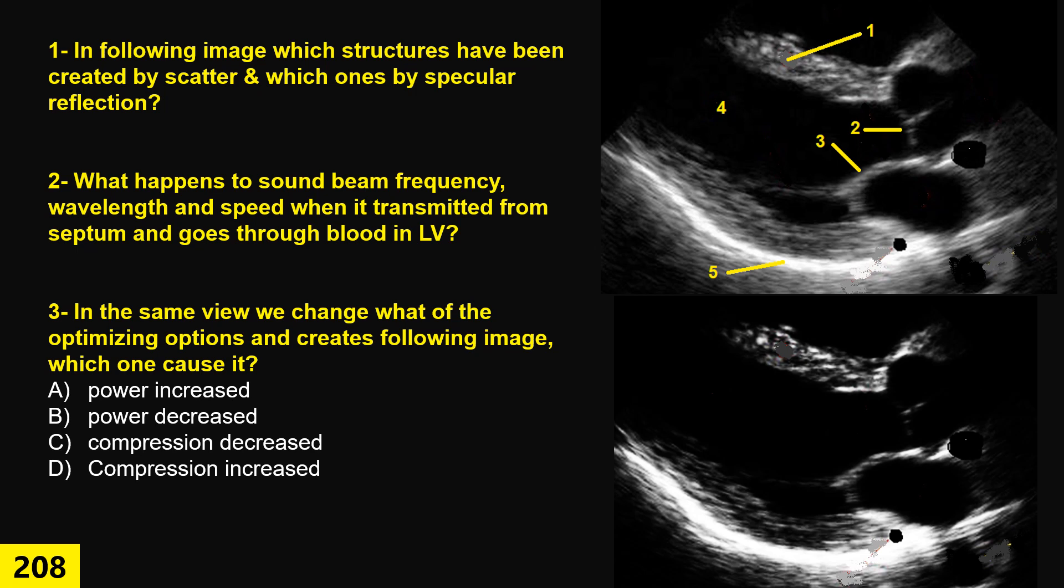Question first. We have here plaques and ultrasound machine created these images. Each of them is created by reflected sound. That is the reason we call it ECHO. There are many behaviors of reflected sound. Two of them that majorly create images are specular and scatter. So based on that concept, what type of reflection has been created? This is blood, and those are the septum, valve, and here pericardium. We have to mention each of them is created by each of those reflection principles.